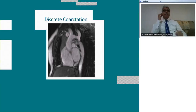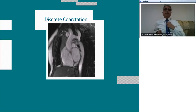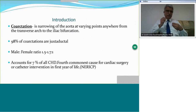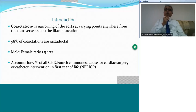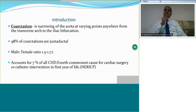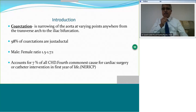Coarctation is a narrowing of the aorta at various points anywhere from the transverse arch to the iliac bifurcation. The disease comes with a male-to-female ratio of 1.5 to 1.7:1, and it accounts for 7% of all congenital heart diseases. It is the fourth commonest cause for cardiac surgery or catheter intervention in the first year of life, based on data from the New England Regional Infant Cardiac Program.